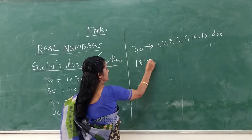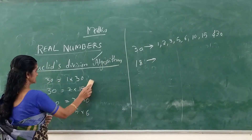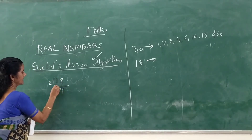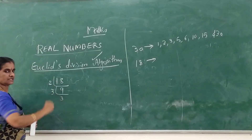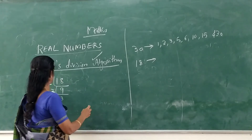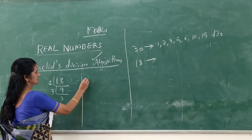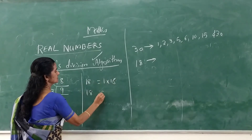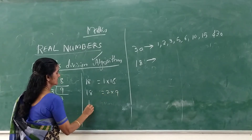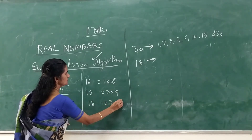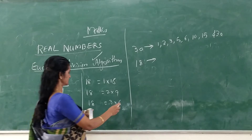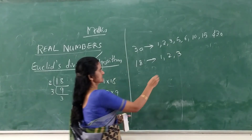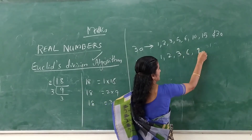And now 18. Let us factorize 18: 18 = 1×18, 18 = 2×9, 18 = 3×6. Therefore, the factors of 18 are 1, 2, 3, 6, 9, and 18.